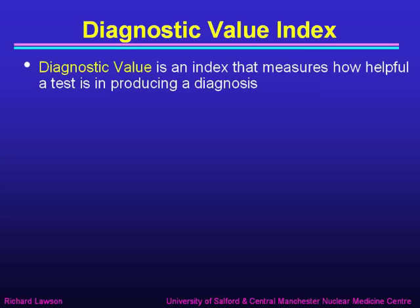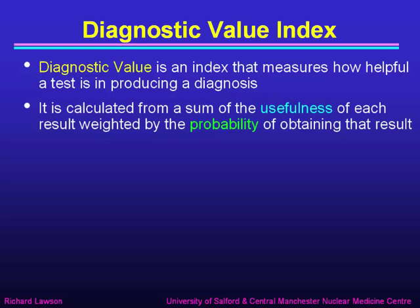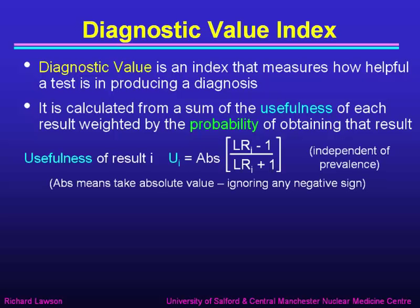The diagnostic value index is a number that measures how helpful a test is at producing a diagnosis. It's calculated from a sum of what Jim called the usefulness of each result, weighted by the probability of obtaining that result. The usefulness of a result i — which might be a positive result, a negative result, or any other outcome — is the absolute value of the likelihood ratio for that result minus 1, divided by the likelihood ratio plus 1, where absolute value means we always treat the number as positive.